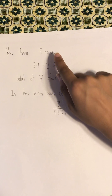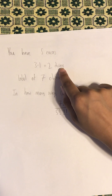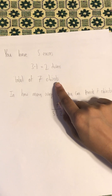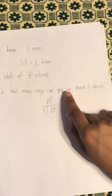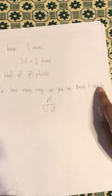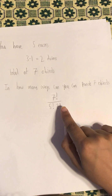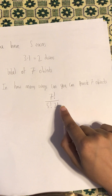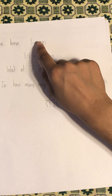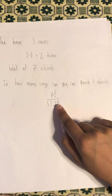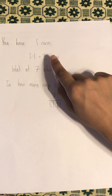We have five erasers, and we have three minus one, which is two dividers, giving us a total of seven objects. We have to find out in how many ways can you permute the seven objects. That gives us seven factorial divided by five factorial times two factorial. We get five factorial because we have five indistinguishable erasers, and two factorial because we have two indistinguishable dividers.